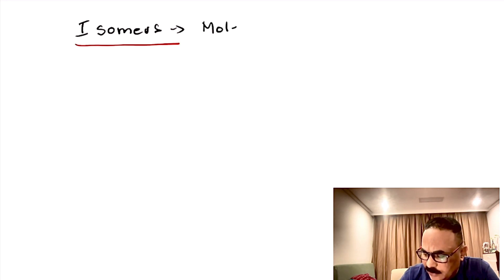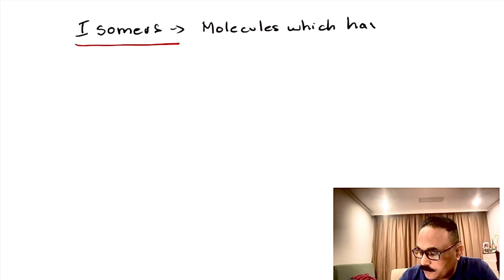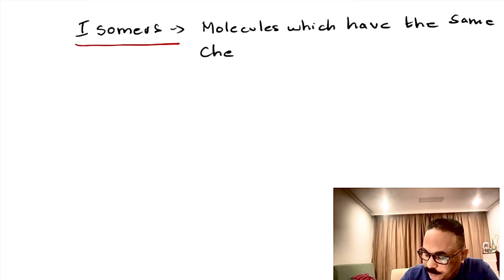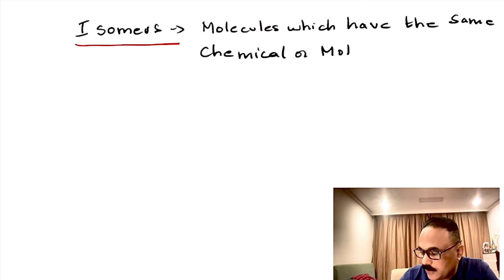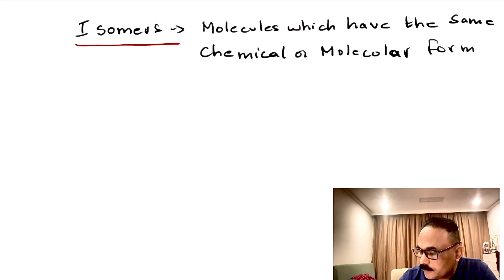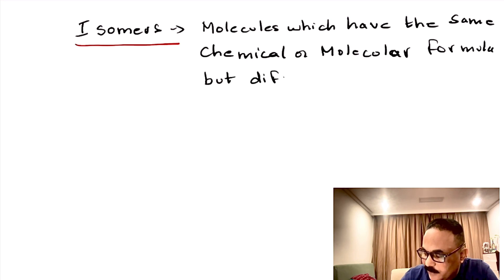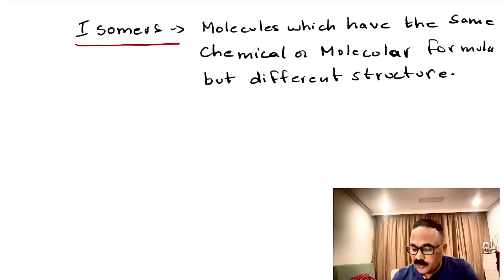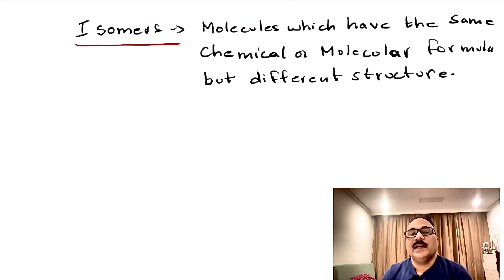Isomers are molecules which have the same chemical or molecular formula but different structures. So, what are isomers? Isomers are molecules which have the same chemical or molecular formula but they have different structure.